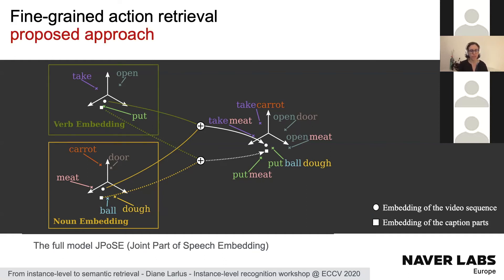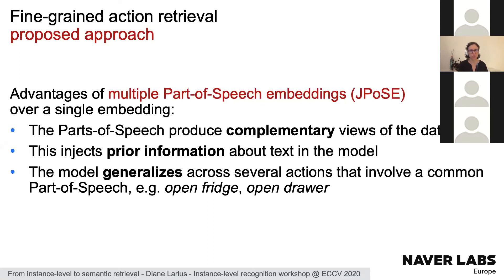We call this full model J-POSE — Joint Part Of Speech Embedding. The advantages of multiple part-of-speech embeddings over a single space are: these parts of speech produce complementary views of the data; we can inject prior knowledge about text structure; and the model can generalize across actions sharing a common part of speech — for example, if we've seen 'open fridge' and 'open drawer,' we can recognize 'open [new object]' even without training on it.